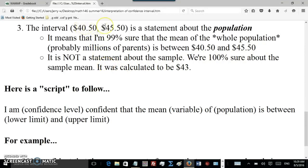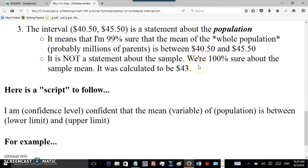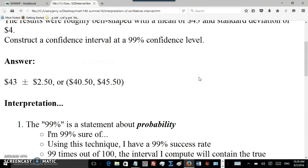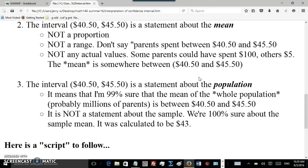So we're saying that the sample mean of the whole population is most likely in between $40.50 to $45.50. And this interval is not a statement about the sample. We're 100% sure about the sample mean. That was $43. It says so right there. It says the results were roughly bell-shaped with a mean of 43. So we're 100% sure about that. That's actual data, but we're trying to come up with an estimate for the population. That's the whole point of doing a sample in the first place.